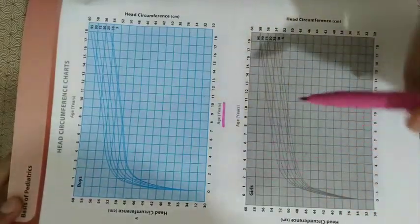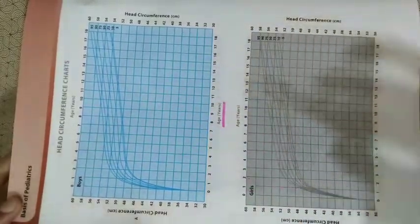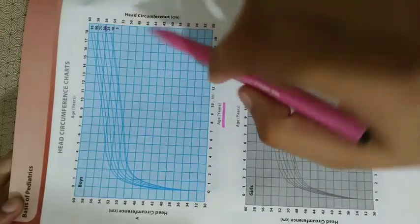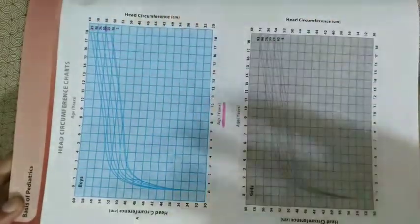The rules of this chart are the same as previous charts. The 50th is the average, 25th to 70th is normal, below the 5th is very little centile, and above the 95th is very high centile.